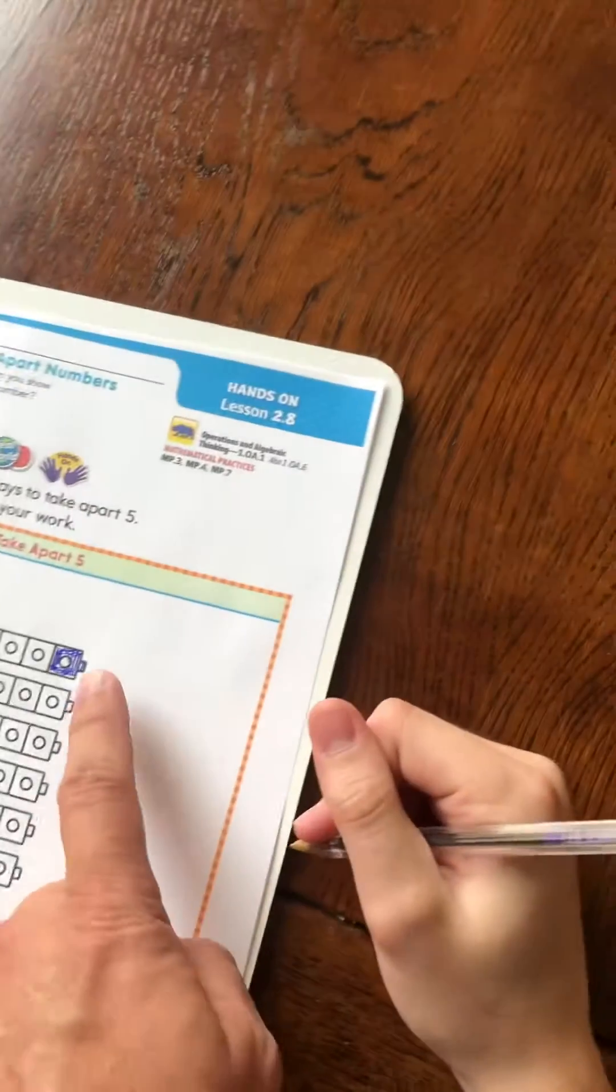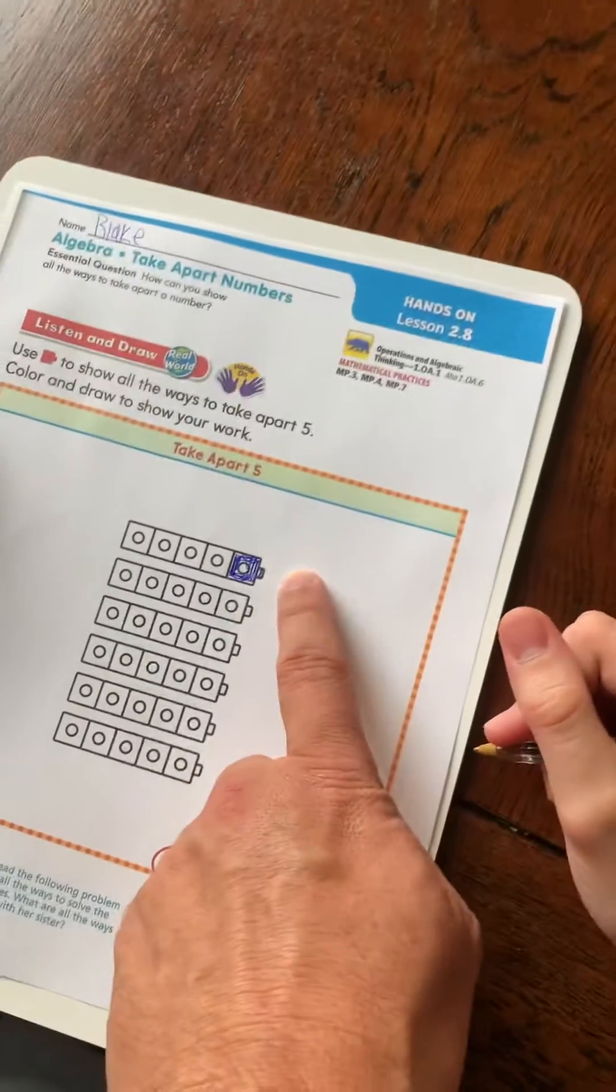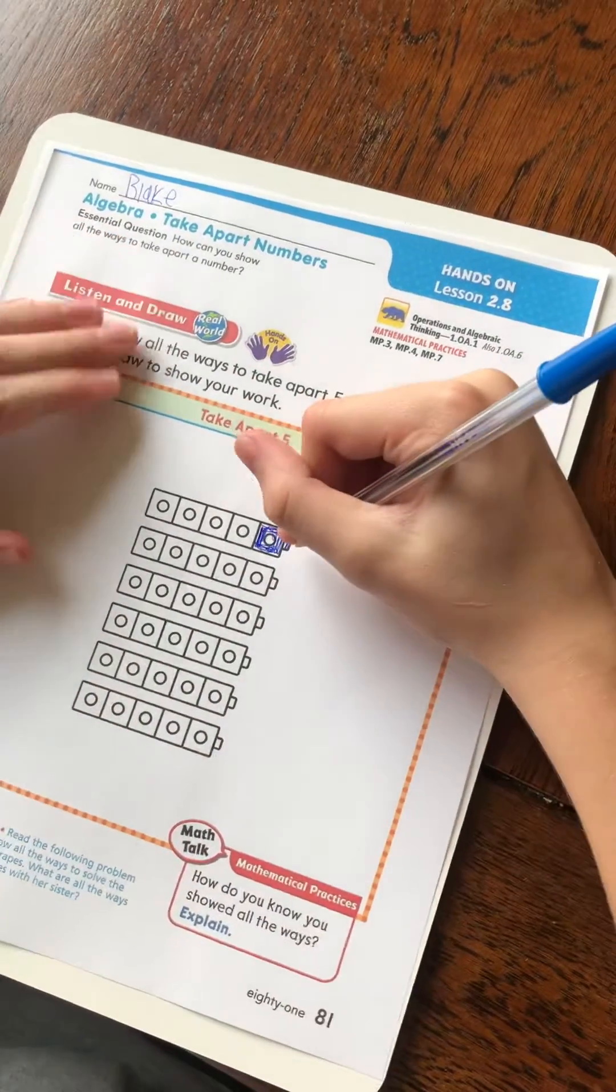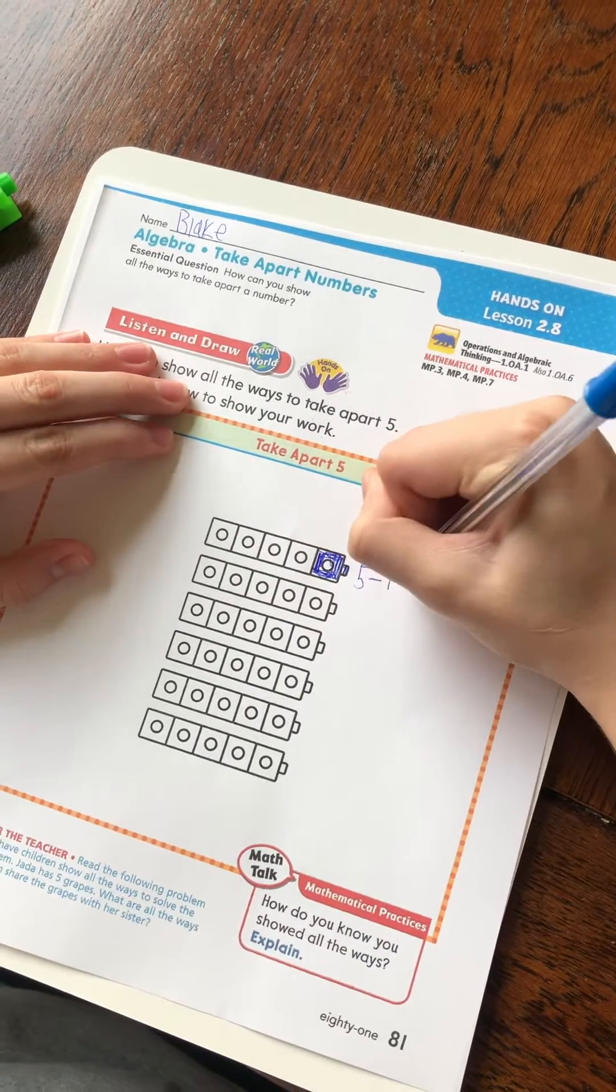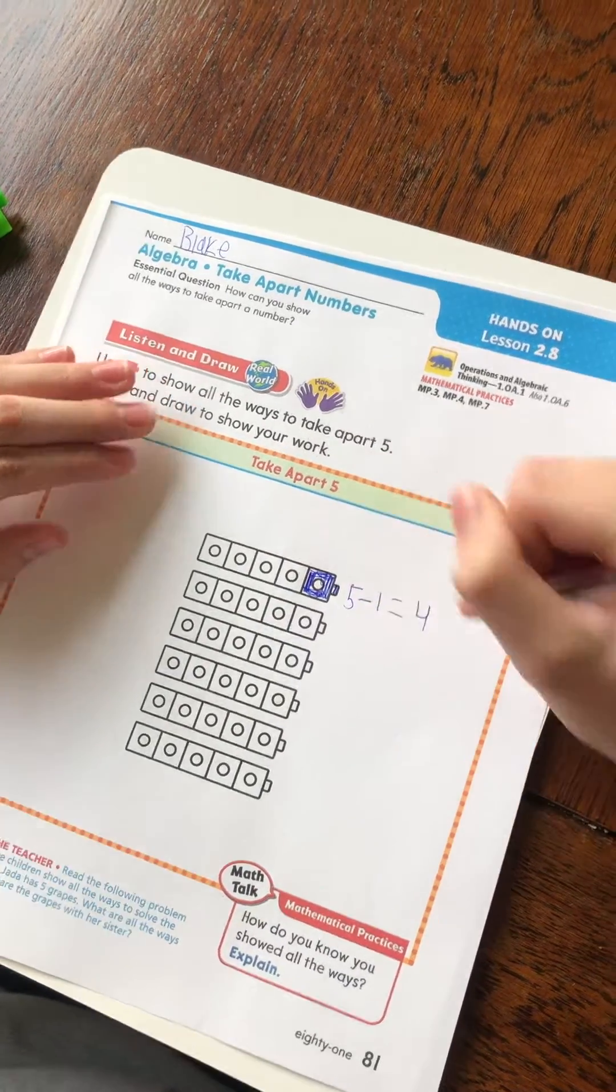And so next to that, you would write, how many blocks did you start with? We started with five, and we took away one. And that equals? Four. Wait, how do you know it equals four?